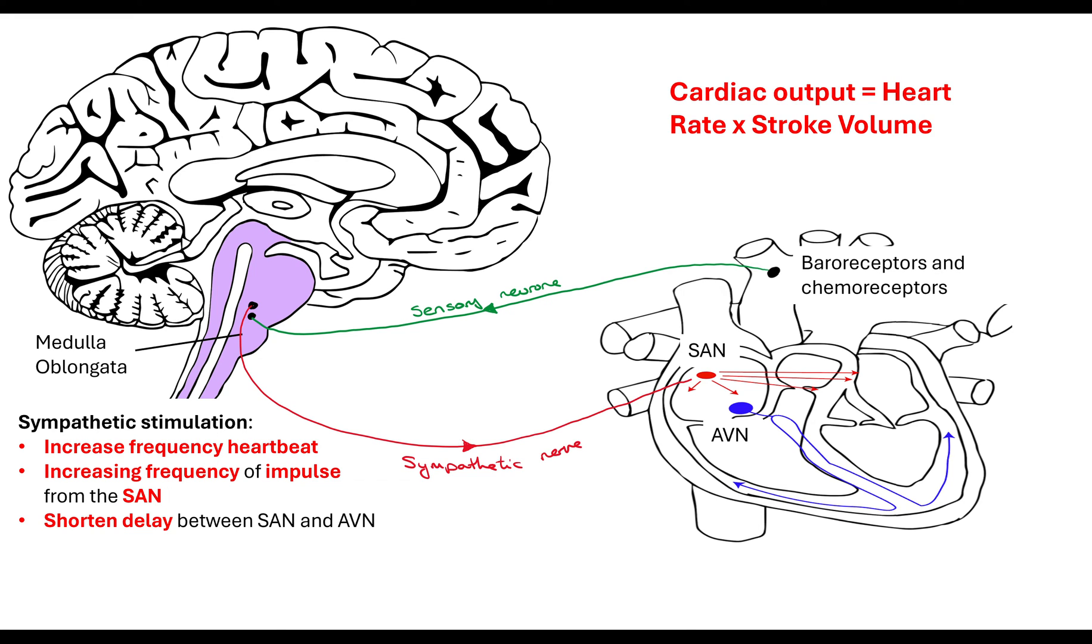It also shortens the delay between the sinoatrial node and the atrioventricular node. We normally want there to be a longer delay because we want to ensure that the atria are completely empty before the ventricles are completely filled, before it contracts and the blood is squeezed out. But if we're increasing the frequency of the heartbeat, we need to not only increase the frequency of the impulse from the SAN, we need to shorten that delay between the SAN and AVN. That's going to also result in an increased force of contraction. We're going to supply more blood to the heart. Why? What is all these things doing? We're wanting to get the blood circulating around the body at a faster rate. Either because we need to provide more glucose and oxygen to our muscles that are respiring, or we need to actually slow it down if the pressure goes in the wrong direction.